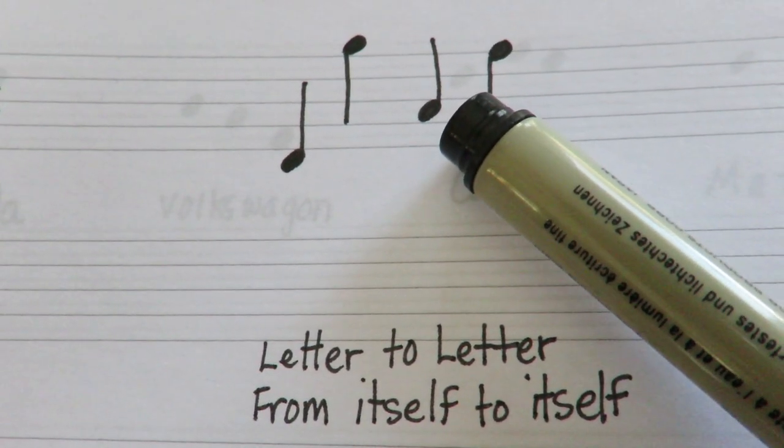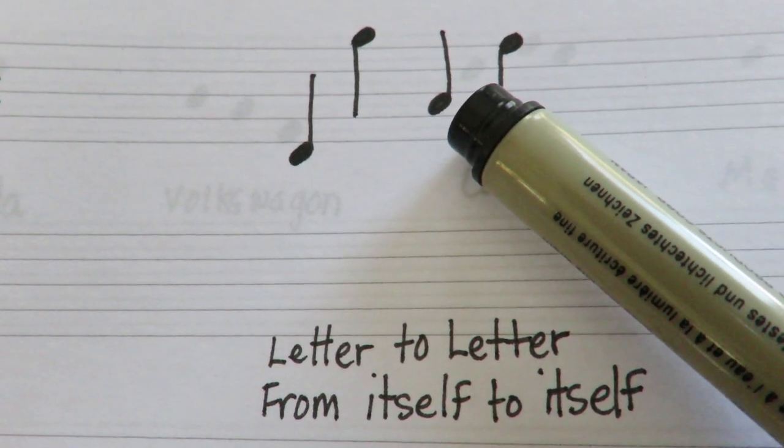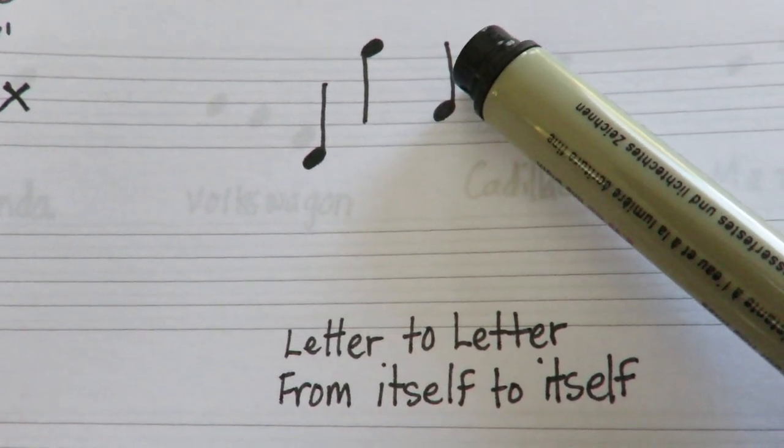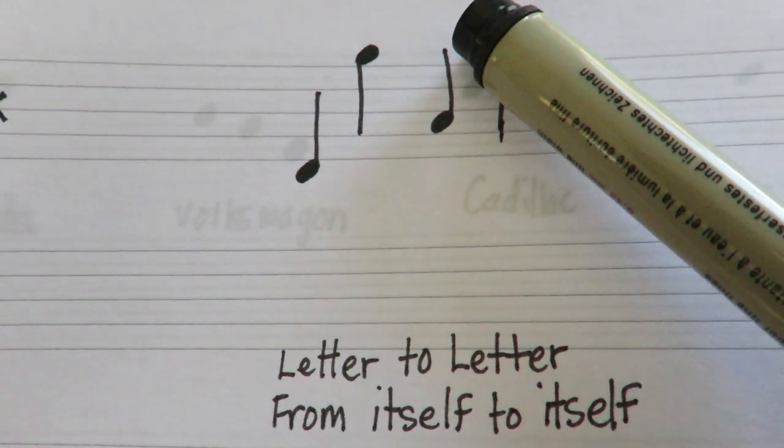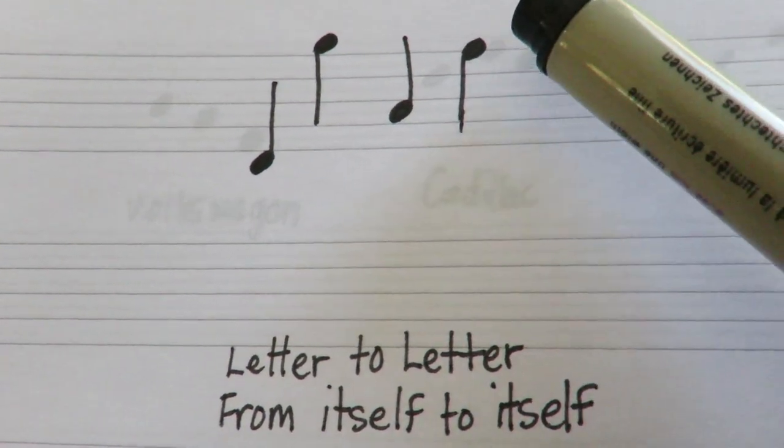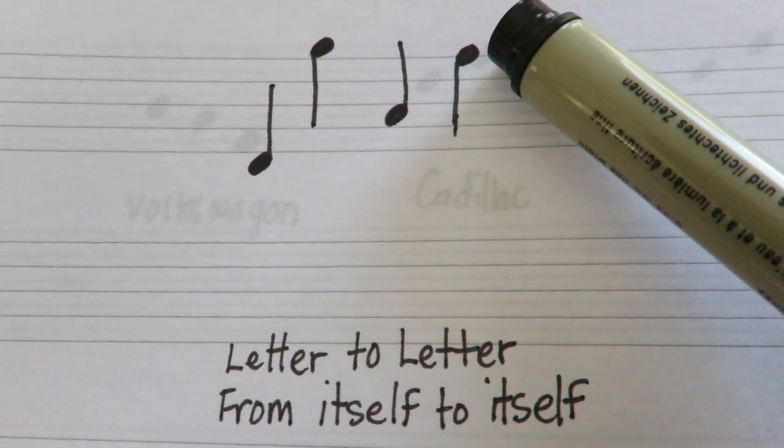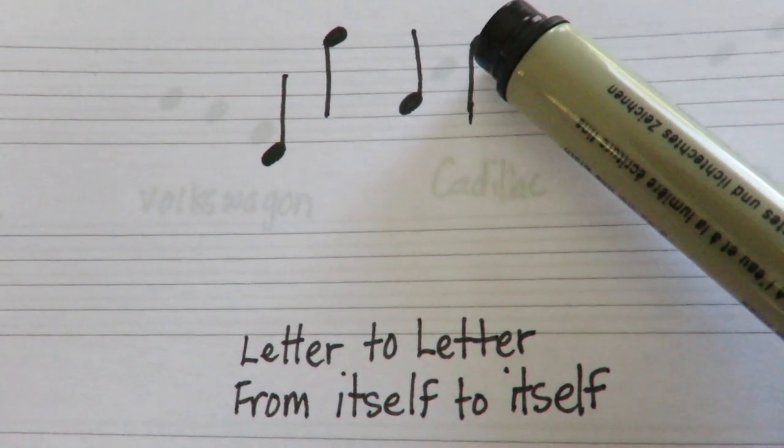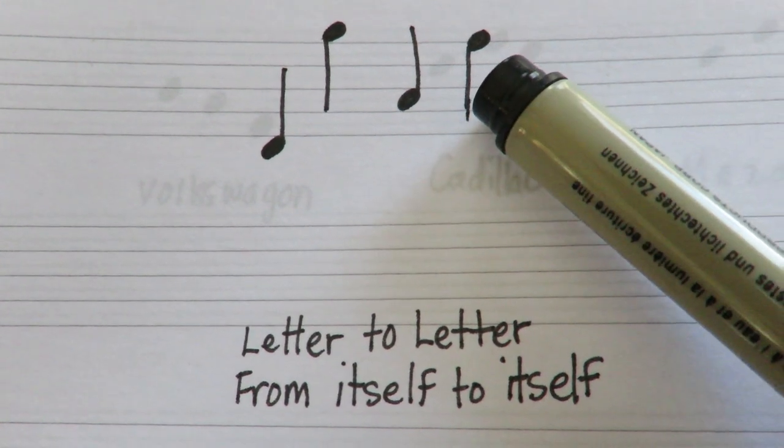This one is an A. It's below B. My stem goes up on the right from A to where F G A would be. This one is above the B line, an F. The stem has to go down on the left from F to F.